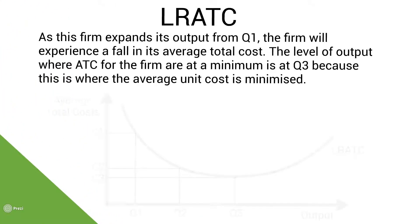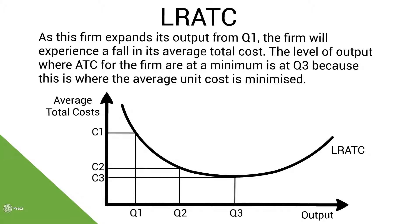Now let's look at the same diagram but without the short-run average total cost curves, as the diagram is much clearer without them. As this firm expands its output from Q1, the firm will experience a fall in its average total cost. The level of output where average total cost is at a minimum is at Q3, because this is where the average unit cost is minimized. This is the lowest point of the long-run average total cost curve. If the firm increases output beyond Q3, the average total cost would rise.